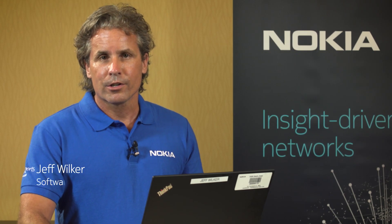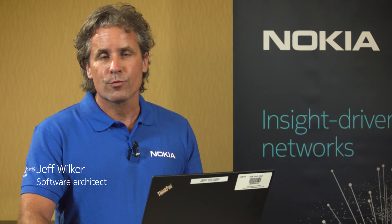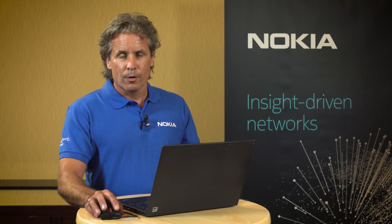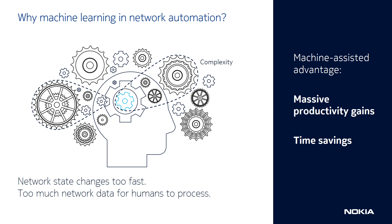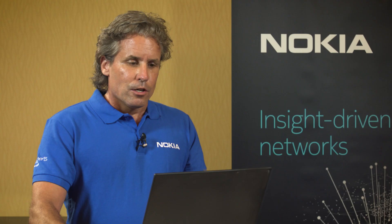Hi, my name is Jeff Wilker. I'm a software architect working on the Nokia network services platform. Machine learning is of interest in network automation for a number of reasons. Modern networks are complex and constantly evolving and they simply produce too much data for humans to consume. Machine learning can assist in this, ultimately improving operator productivity and saving time.